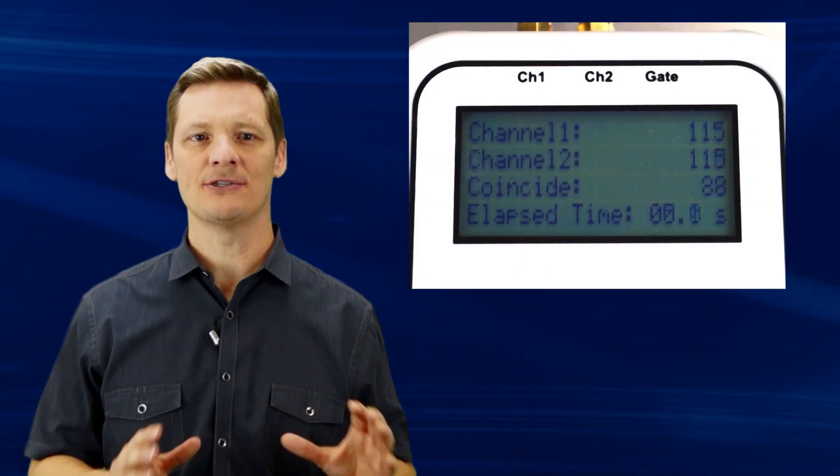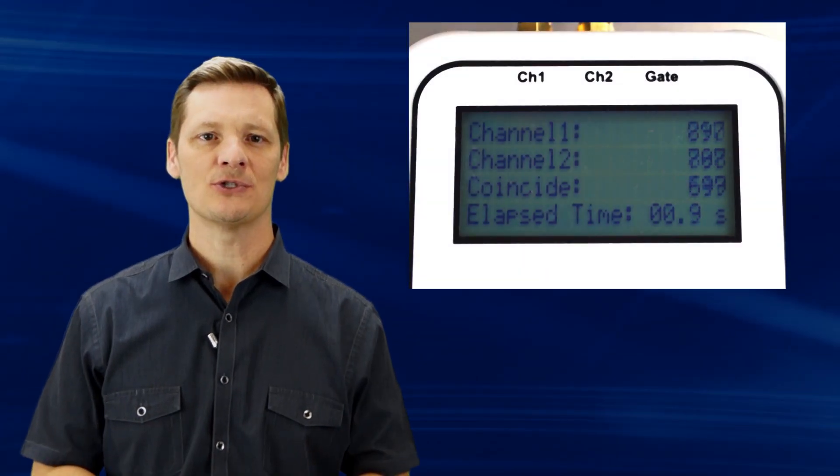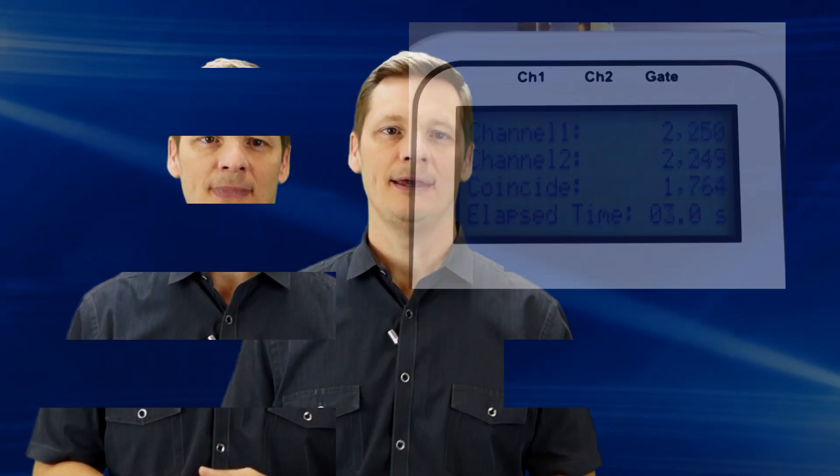The count screen is pretty simple — it just displays the singles and coincidence rates for the two attached detectors. In the menu screen, this is where all the parameters of the coincidence measurement are established. I'm not going to go through all the different setup parameters, but if you download the CC1's manual from the Qubitekk website, you'll find that it offers most of the features typical to coincidence counters.